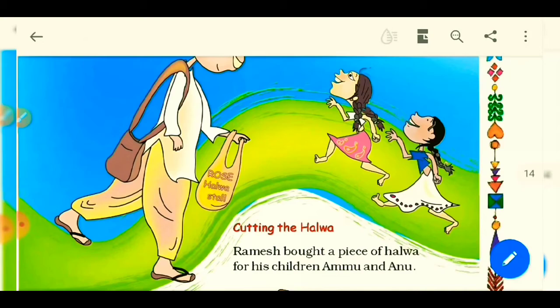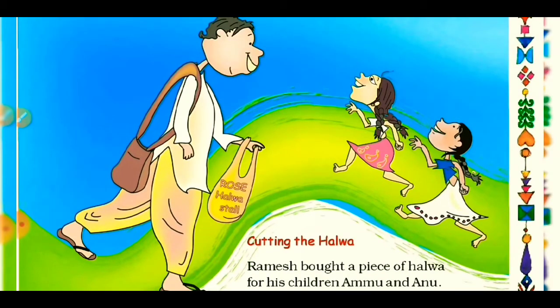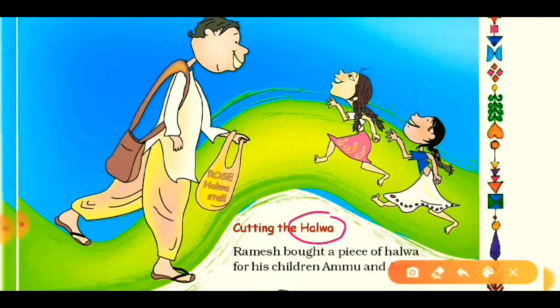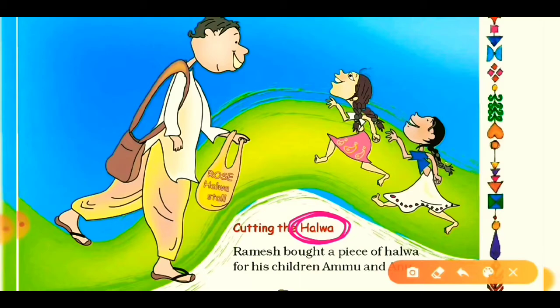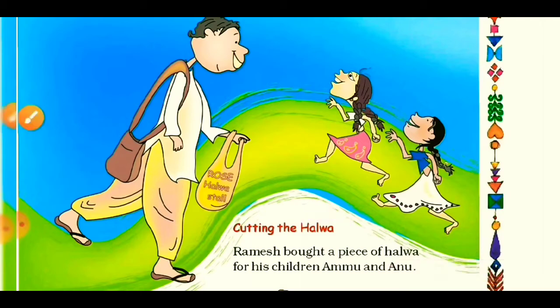Today's class is going to be very tasty because we will study about halwa. Halwa is a sweet dish made using ingredients like grain flour — rice and wheat — plus nut butter and sugar. Did you know that Tamil Nadu is famous for its very popular dish, wheat halwa? Now let's have the reading.